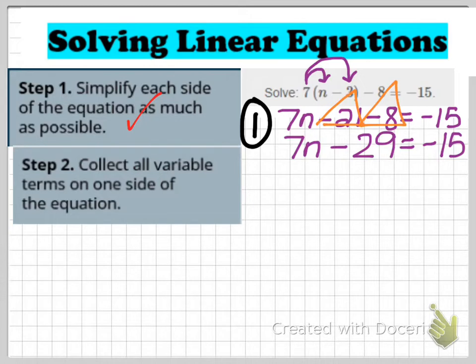Step 2 tells me to collect all variable terms on one side of the equation. As I look at my equation, I only see the n variable once — it's already on the left side. So I don't really have to do anything for step 2 because all the n's are already on the same side. There's nothing to do here, so I'm done with step 2.